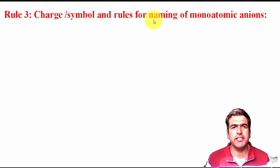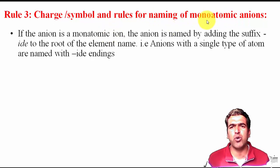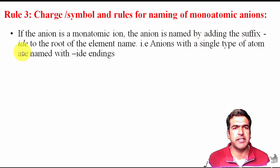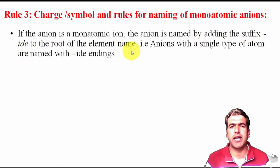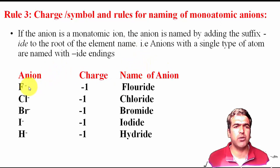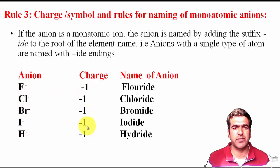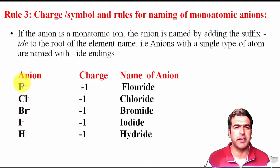Now, rules for naming anions. For monatomic anions — those made of a single atom — the rule is: the anion is named by adding '-ide' to the root of the elemental name. For example, halogens form fluoride, chloride, bromide, and iodide, all with a minus-one charge. These are monatomic anions.